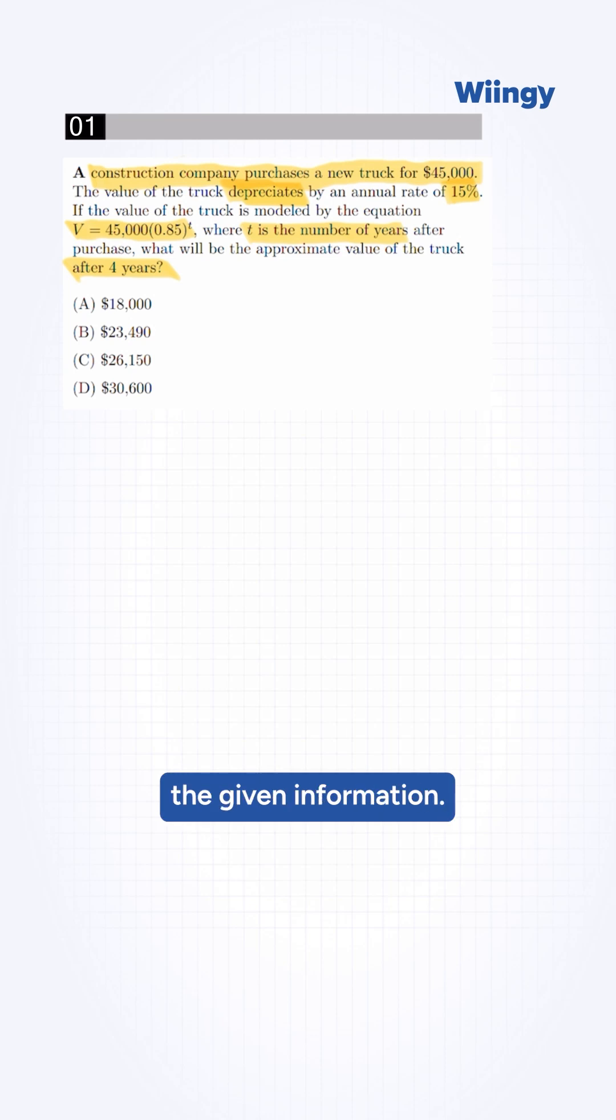Here, we first need to identify the given information. The initial value will be $45,000, and the decay factor r will be 0.85, which is already calculated in the equation. The time t is four years.